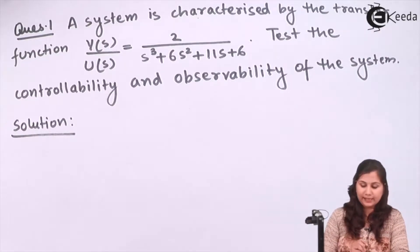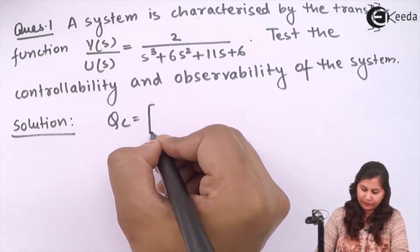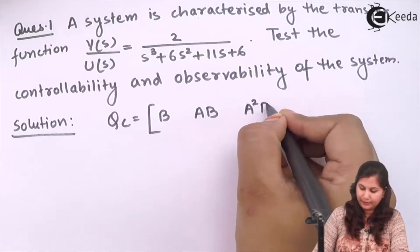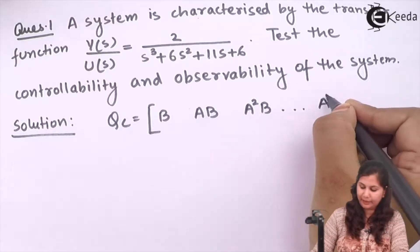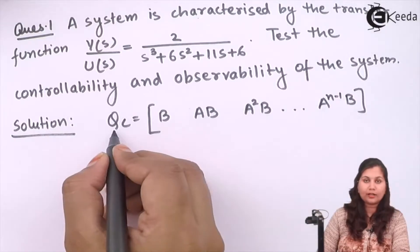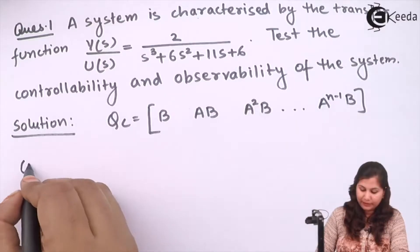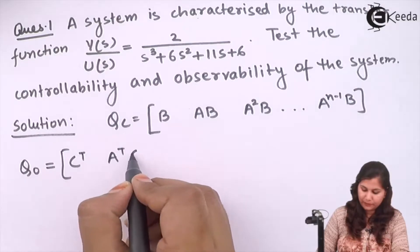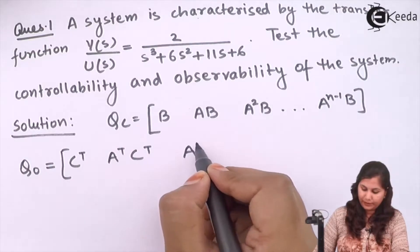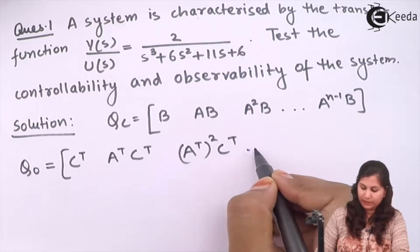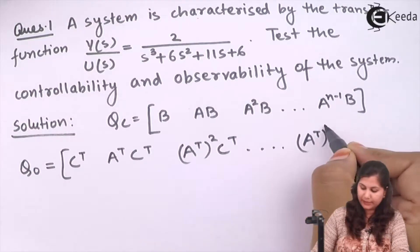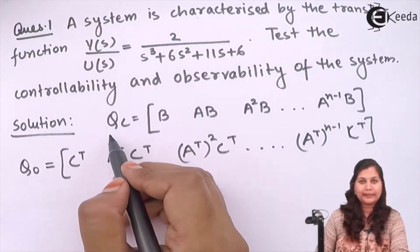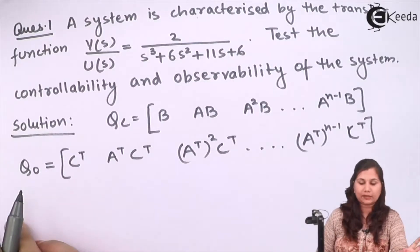Qc is the controllability test matrix, and it is given by [B, AB, A²B, ..., Aⁿ⁻¹B]. The observability test matrix Q₀ is given by [Cᵀ, AᵀCᵀ, (Aᵀ)²Cᵀ, ..., (Aᵀ)ⁿ⁻¹Cᵀ]. This is the controllability test matrix and this is the observability test matrix.